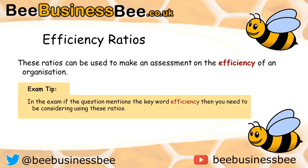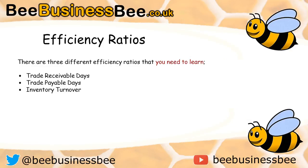Let's start by looking at what is meant by the term efficiency ratios. These are ratios that allow an assessment to be made on the efficiency of an organization. A typical exam tip: in the exam you tend to find the keyword 'efficiency' being mentioned — if you see that, you'll need to use one of these three ratios.